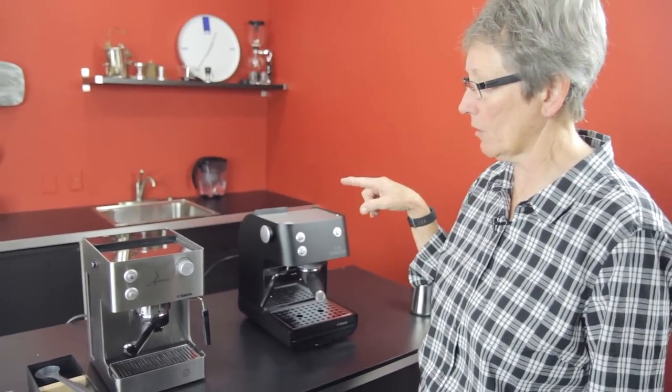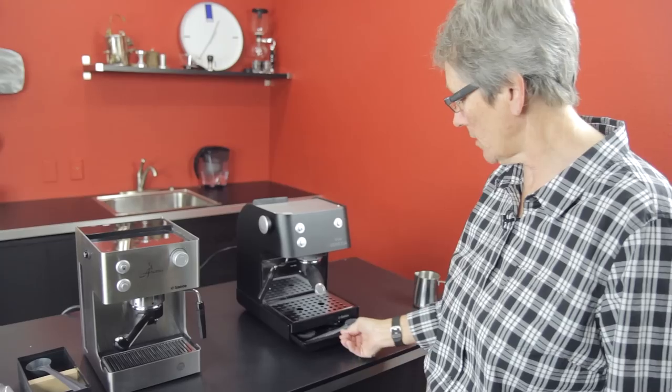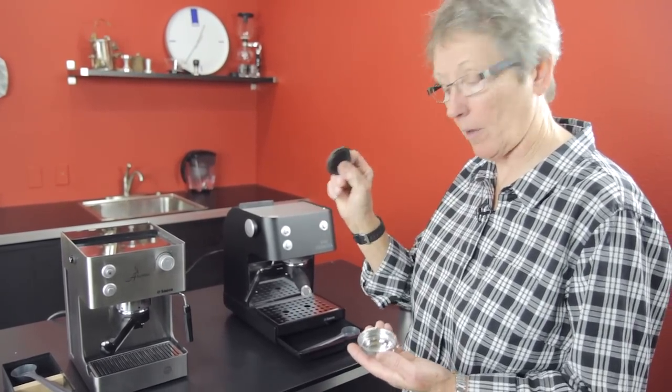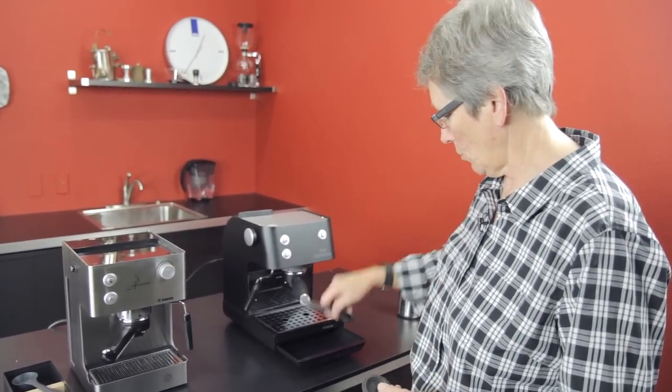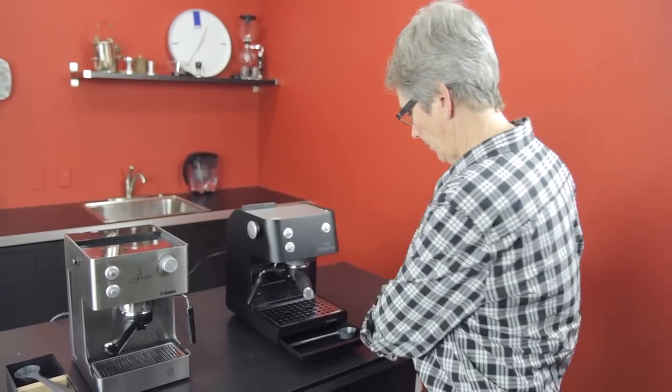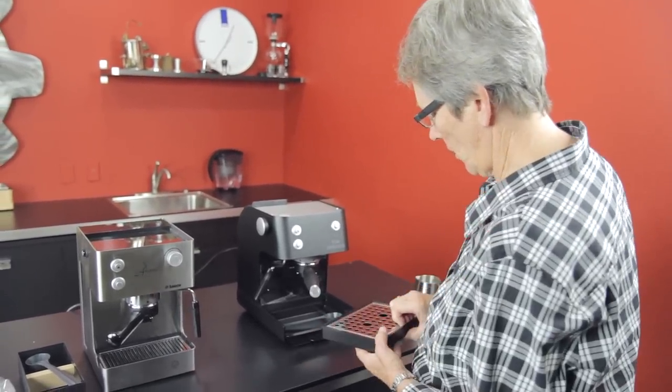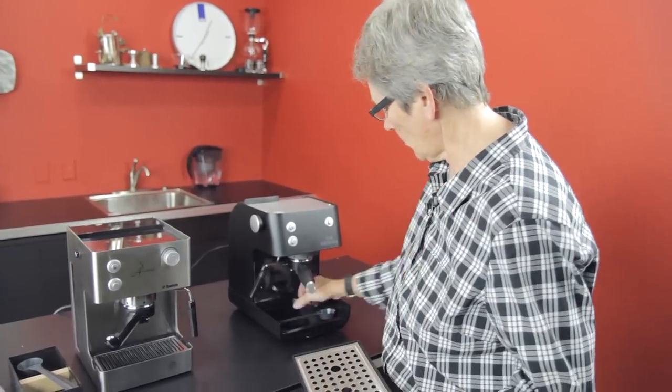Both of these machines are equipped to do ESE pods, and they give you the single basket, and then this is for the pods, the pod adapter. They give you a scoop as well with the Via Venezia, and this is your drip tray. This is your accessory tray down here. You can put all your stuff in there.